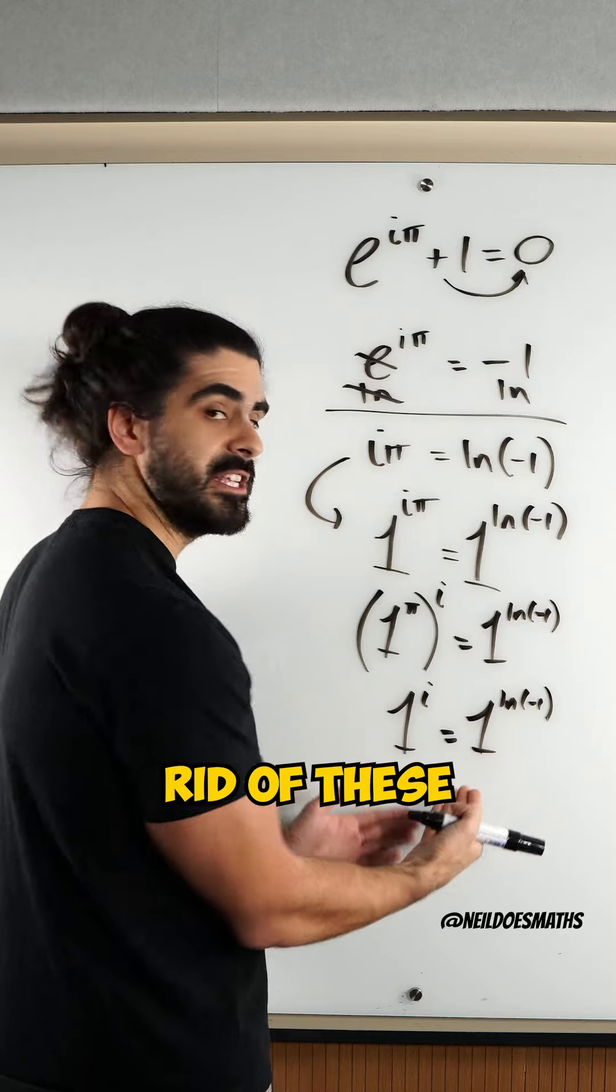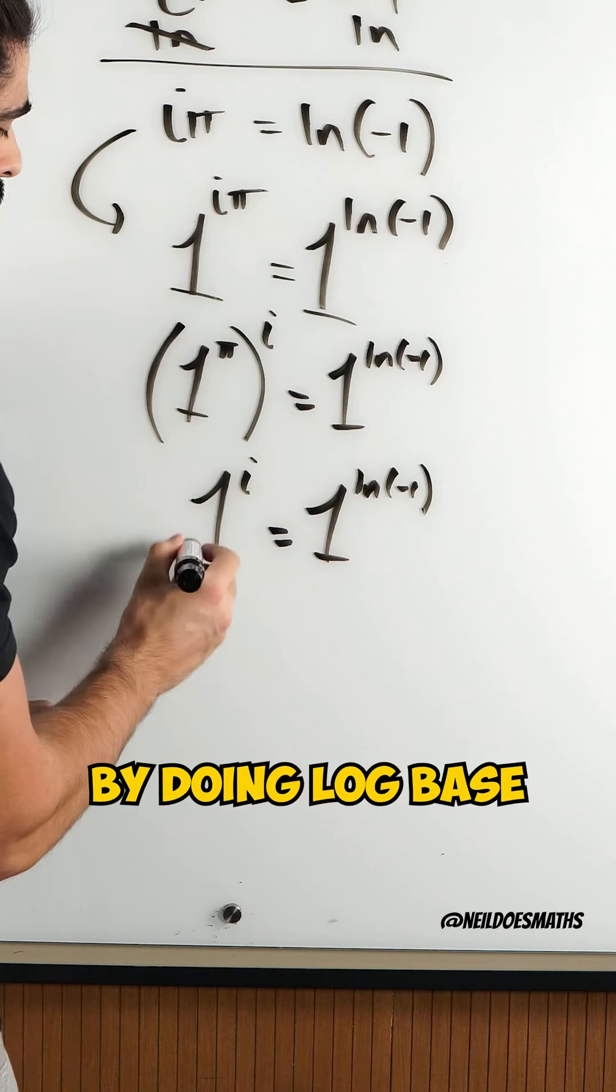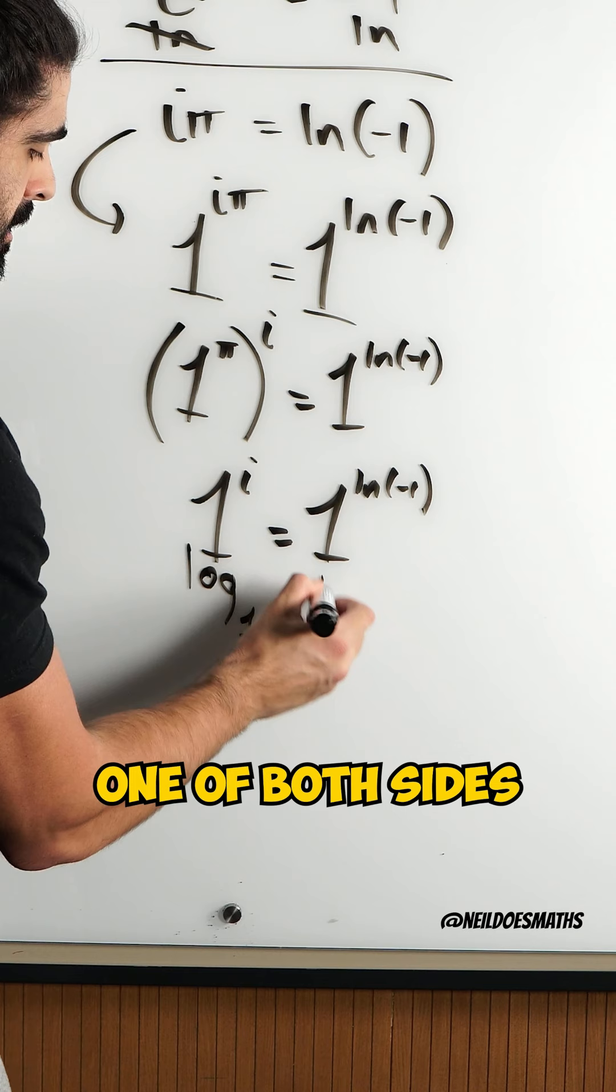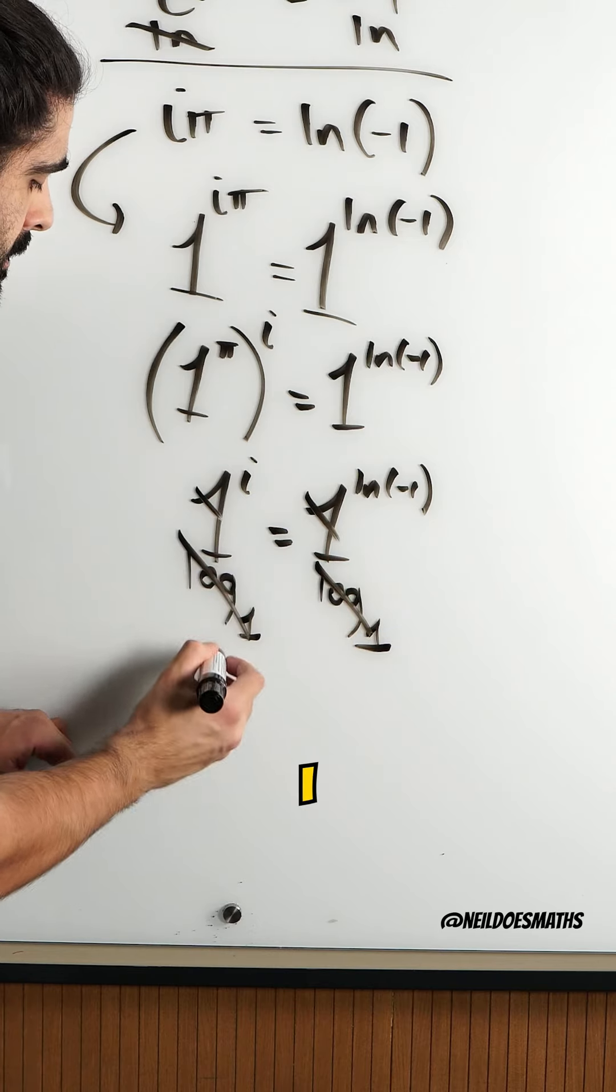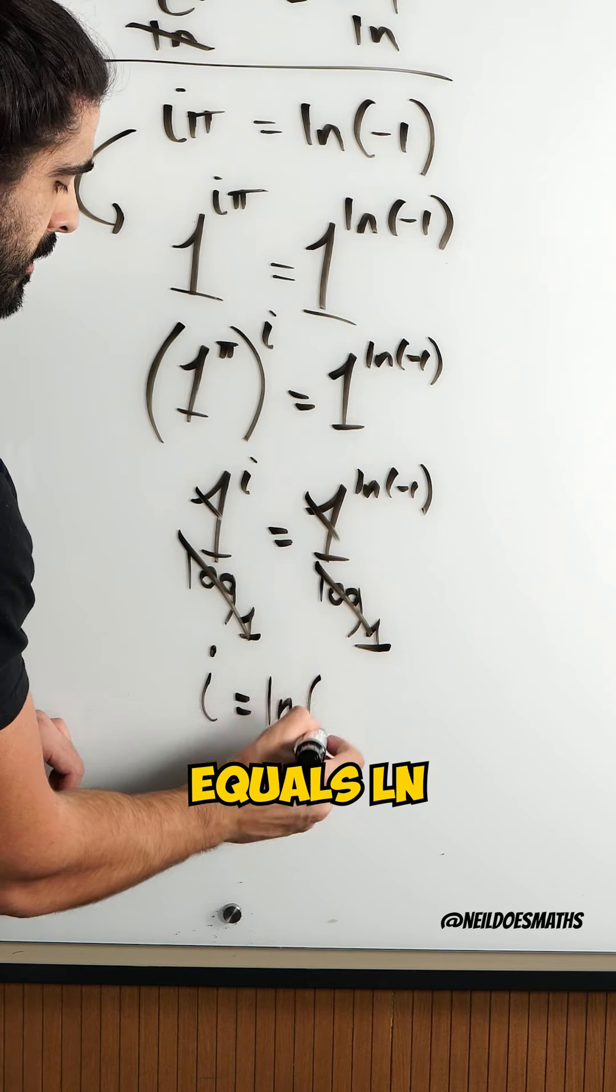Then I'm going to get rid of these base ones by doing log base 1 of both sides. After doing this, these all cancel and I'm left with i equals ln of minus 1.